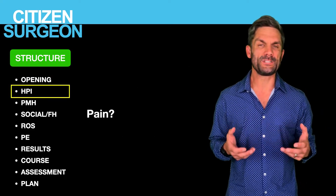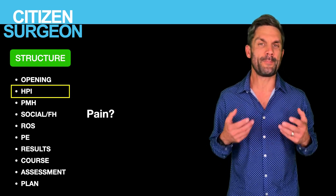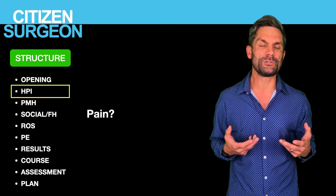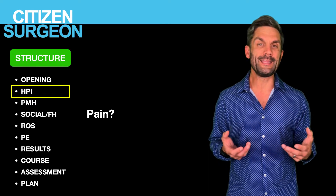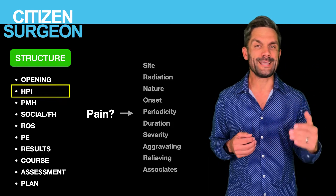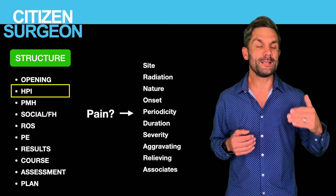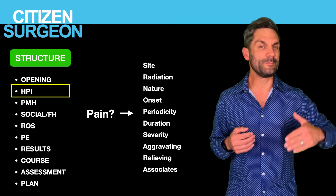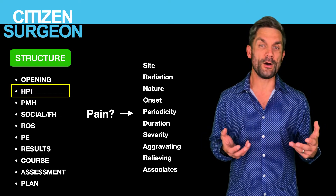Let's get to the HPI — the history of presenting illness. In surgery, this usually has to do with pain. I use an acronym called SRNOPD-SAR: site, radiation, nature, onset, periodicity, duration, severity, aggravating, relieving, and associated. I do it in that order for a particular reason — it helps with flow. I have a separate talk on how to take a history linked above. Those who know the patient really well communicate clearly — it's not jumbled, it just flows.